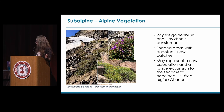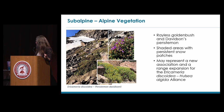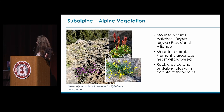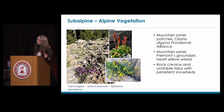We also have alpine and subalpine vegetation types, such as stands of rayless goldenbush with Davidson's penstemon, found in shaded areas with persistent snow patches. This will be a range expansion of the Ericameria discoidea–Holodiscus algida alliance found in the Sierra Nevada. Another alpine vegetation type seen in the Warner Mountains is the mountain sorrel alliance, currently a provisional alliance with limited data. In the Warners, we see mountain sorrel with Fremont's groundsel and heart-leaf willow-weed. This additional data will help us determine how to treat this provisional alliance in our hierarchical vegetation classification.